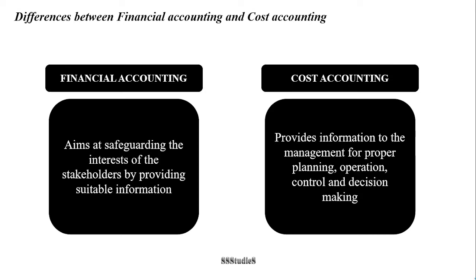Financial accounting aims at safeguarding the interests of the stakeholders by providing suitable information. Stakeholders can be inside stakeholders as well as outside stakeholders — it can be useful for the employees of the company, for the management, for government officials and departments, for the general public, for shareholders, for debenture holders, and for financial institutions which have provided loans to the business, as well as banks. The main aim is to safeguard the interests of all these stakeholders.